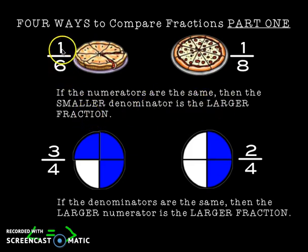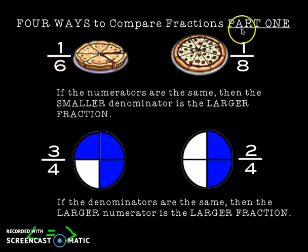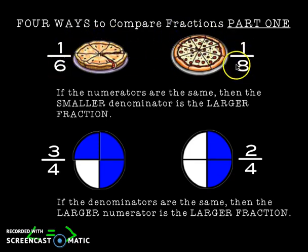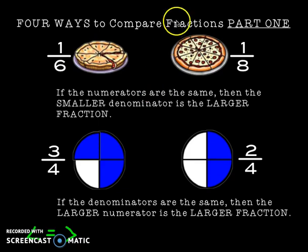Let me show you what I mean. Here is one out of six — that's my numerator one. Here's one out of eight, and you can see my numerators are the same. Well, my denominators are different sizes because they're cut up into different parts, a different number of parts.